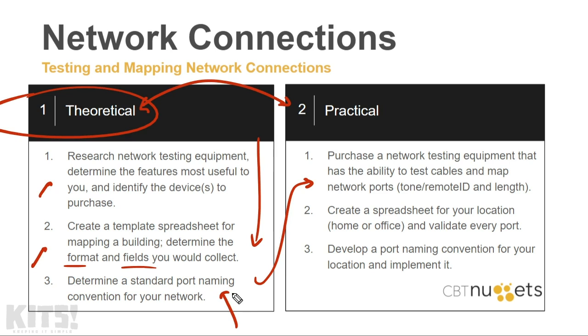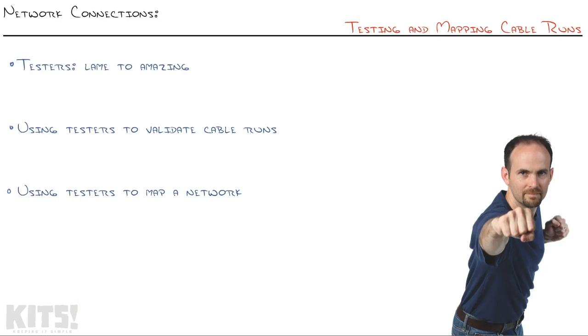Then for the practical, purchase that network testing equipment that has the ability to test cable and map network ports, whether you're using the tone method or the remote ID sensors. Just to give you a ballpark of what that equipment will cost: the ultra-cheap testing equipment is usually $10 to $20. The Ideal one that I use to generate the tone - that gray little handheld beauty - that one was $80. The Klein tools one with the remote ID probes and length capabilities and so on ran about $150. That should give you a range of about what those tools will cost. Then create a spreadsheet for your location, whether it be your house or your office, and validate every port, completing that spreadsheet so you have a cable map implementing that naming convention that you developed.